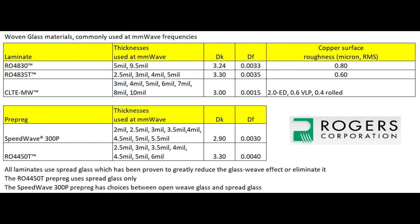The 4450T prepreg is offered in many thin thicknesses: 2.5 mil, 3 mil, all the way up to 6 mil, DK 3.3, DF 0.004. These glass-reinforced materials are normally used when you have multilayers of RF layers, whereas the materials without glass reinforcement are normally used at the surface of the circuit — copper layers 1 and 2. When you have a multilayer with RF layers inside, you do want glass reinforcement to help with fabrication issues, scaling, and registration from layer to layer.